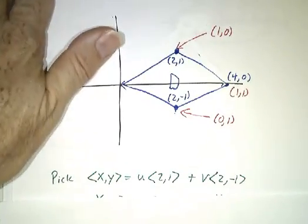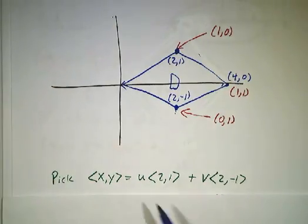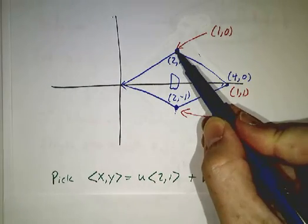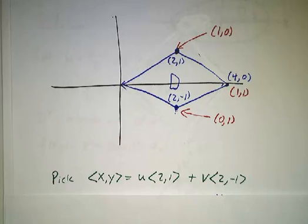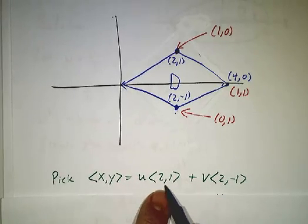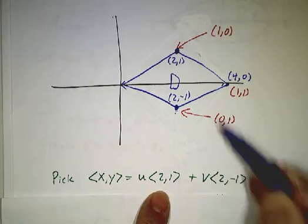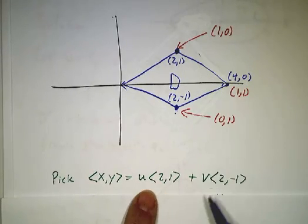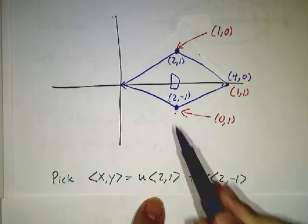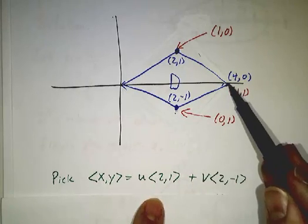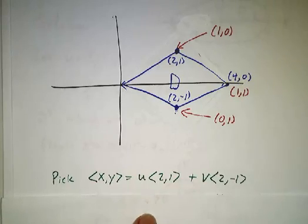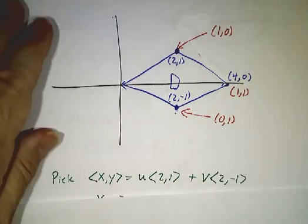So the way we do that is we just say let (x,y) be u times (2,1) plus v times (2,-1). So when u is 1 and v is 0, you just get 1 times (2,1) plus 0, and that's this point. And when v is 1 and u is 0, you just get this point. And this is the sum of the two, so that's where u equals 1 and v equals 1.